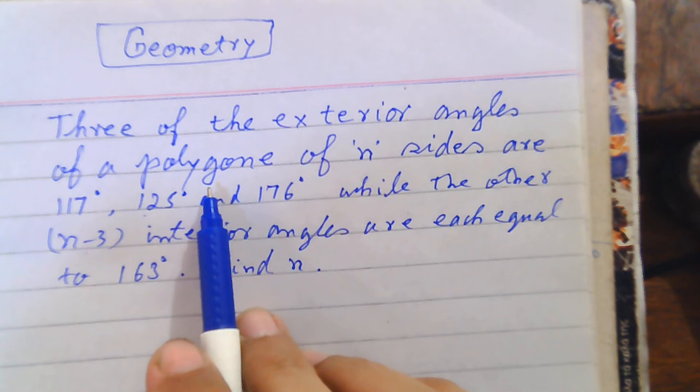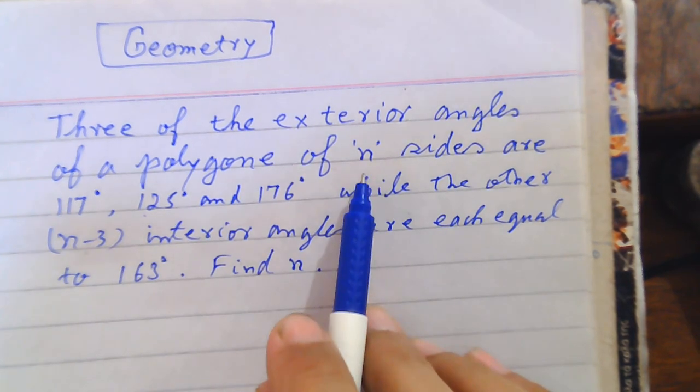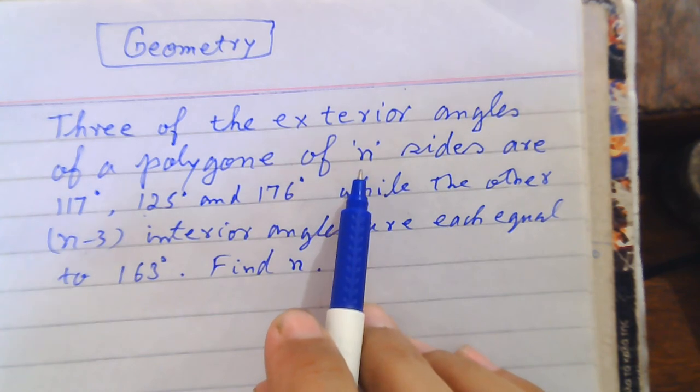Polygon is where the sides are n. We don't know what n can be. 10 can be, 20 can be, 15 can be.